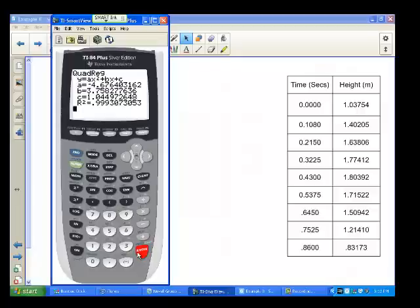Here's what we get: Y equals AX squared plus BX plus C, with A equal to negative 4.6764, B equal to 3.7582, and C equal to 1.0449.